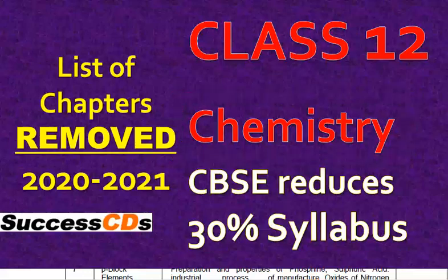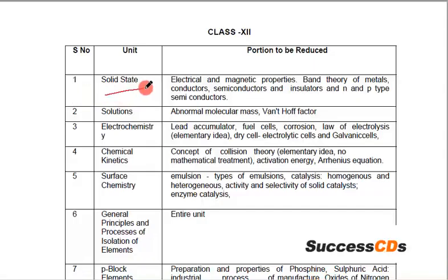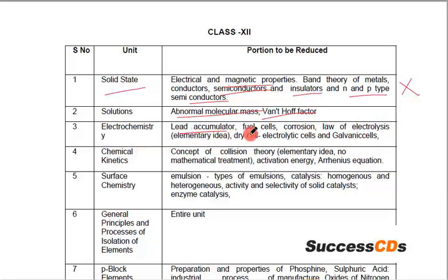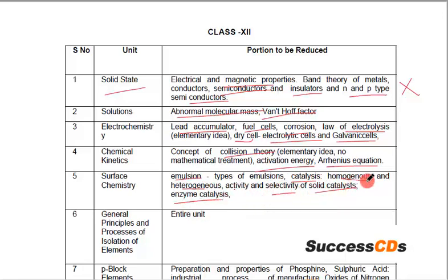Now let us see chapter-wise what topics have been deleted from class 12 Chemistry. Chapter 1, Solid State: electrical and magnetic properties, band theory of metals, conductors, semiconductors, insulators, and N and P-type semiconductors — deleted. From Solutions: abnormal molecular mass and Van't Hoff factor — deleted. From Electrochemistry: accumulator, fuel cells, corrosion, law of electrolysis, dry cell, electrolytic cells and galvanic cells — deleted. From Chemical Kinetics: concept of collision theory, activation energy, and Arrhenius equation — deleted. From Surface Chemistry: emulsion, types of emulsion, catalysis (homogeneous and heterogeneous), activity and selectivity of solid catalyst, and enzyme catalysis — deleted.